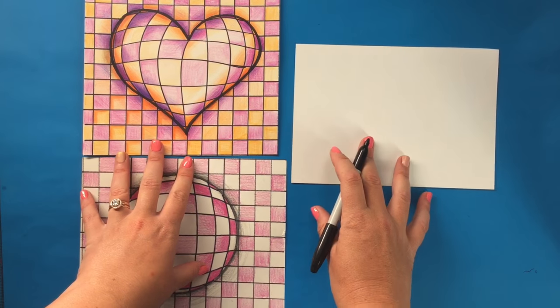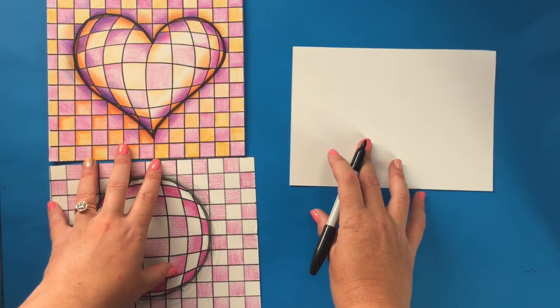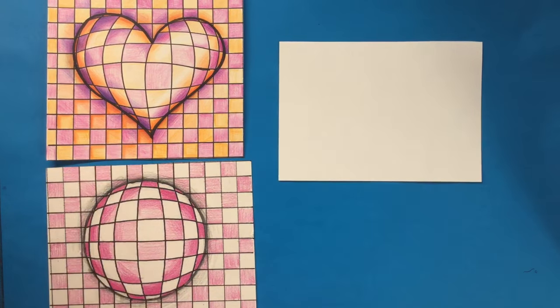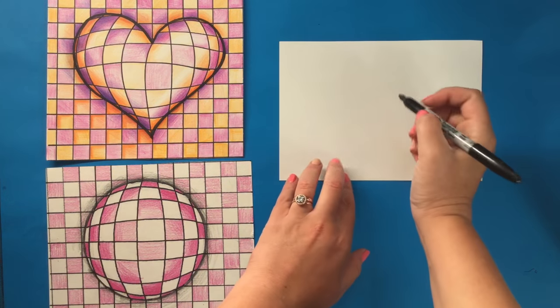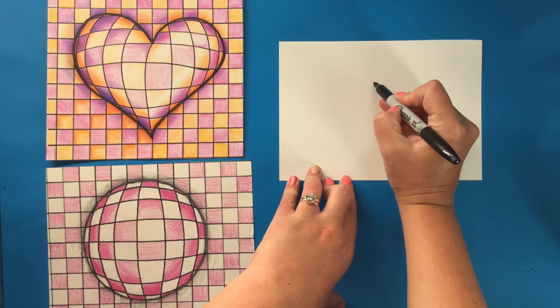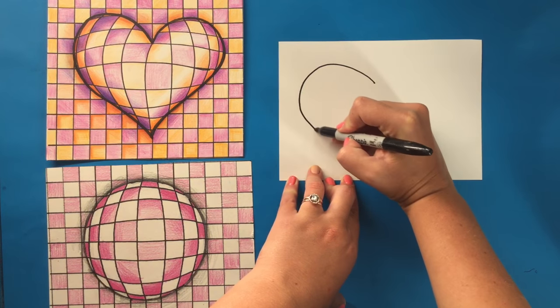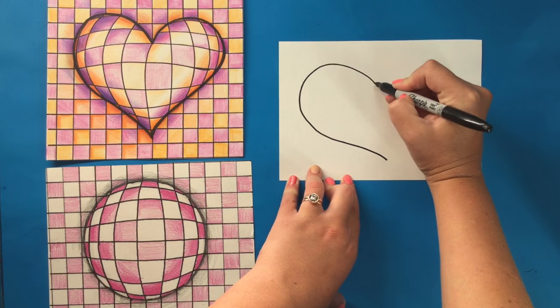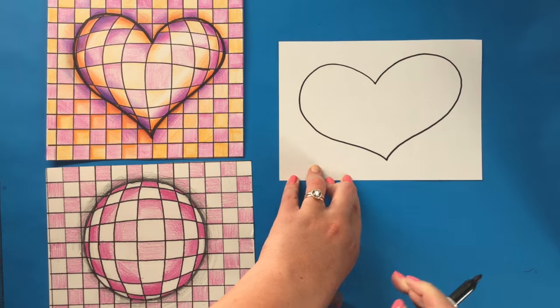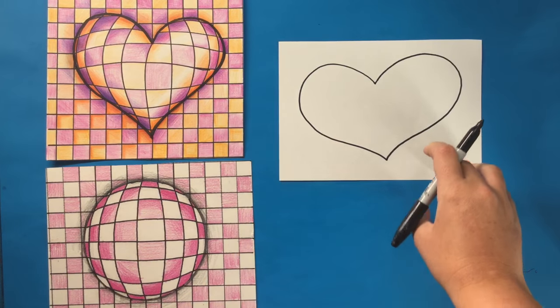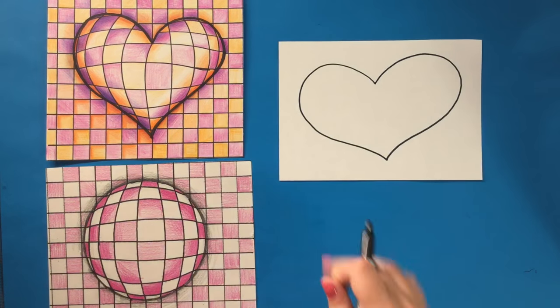So the first thing you're going to do is with a piece of paper and a pencil, you're going to want to first draw your big shape. And I'm going to use a marker to begin so that you can see very clearly.